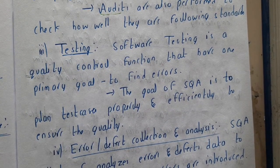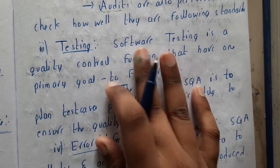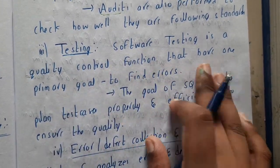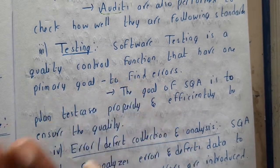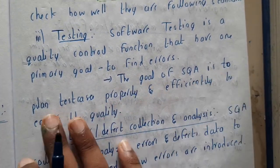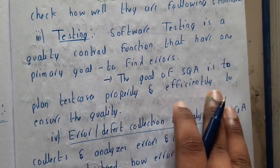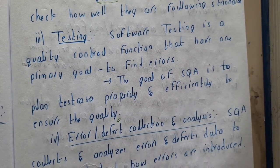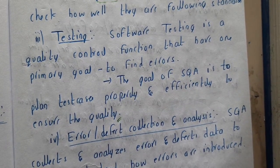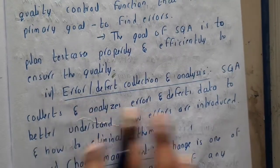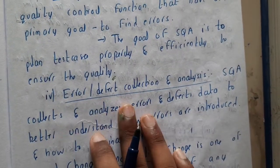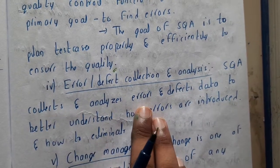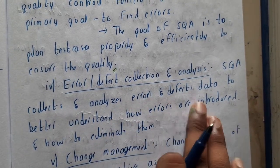Testing is also a key element. If there is some bug or error, you find it with the help of testing. Software testing is a quality control function whose primary goal is to find errors. The goal of SQA is to plan test cases properly and efficiently to ensure the quality.